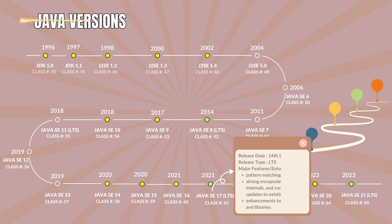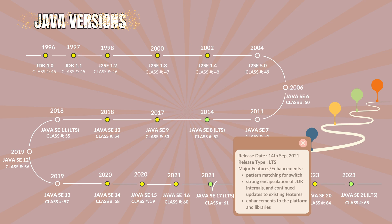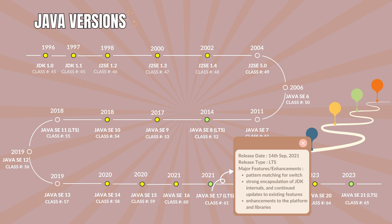Java 17.0 with the class file version 61. It was released on 14th September 2021. Release type is long-term support version. The major features and enhancements are pattern matching for switch, strong encapsulation of JDK internals, continued updates to existing features, and enhancements to the platform and libraries.